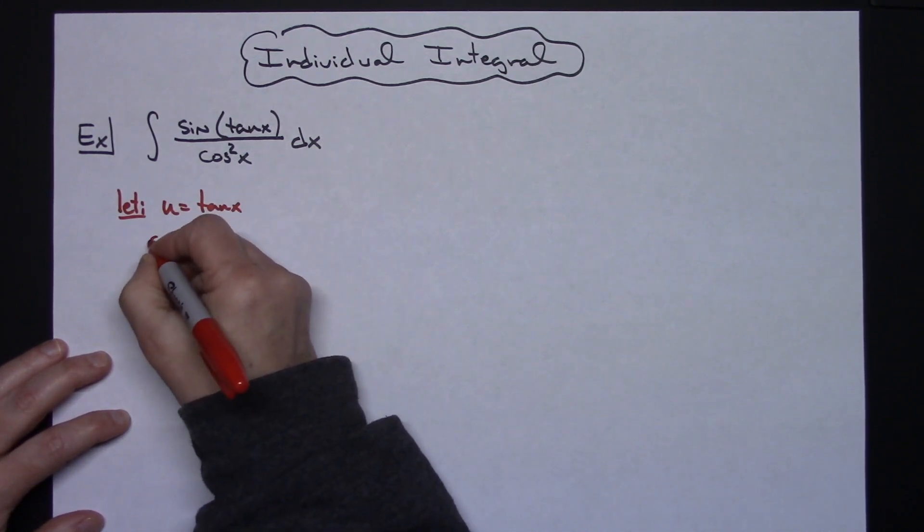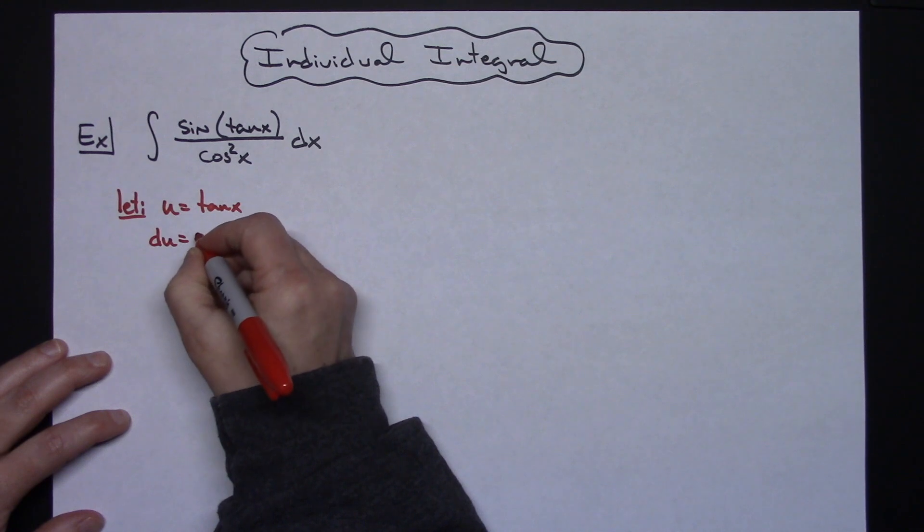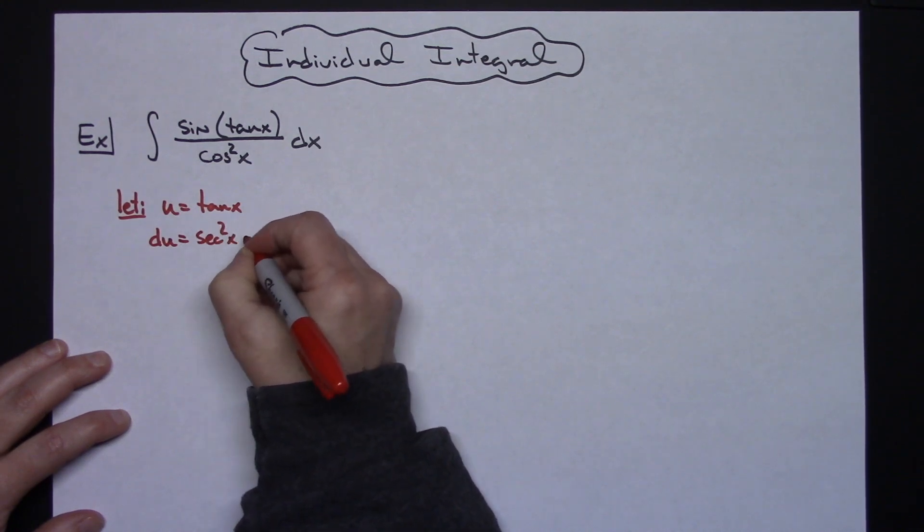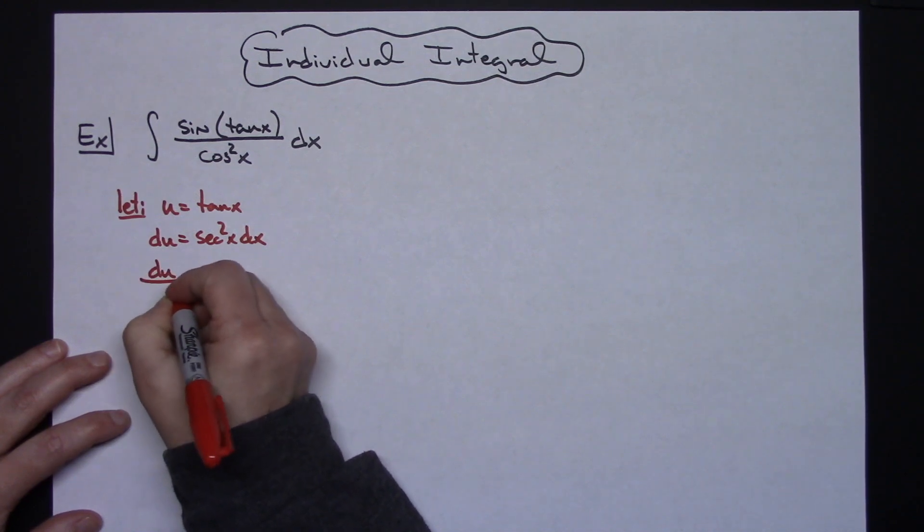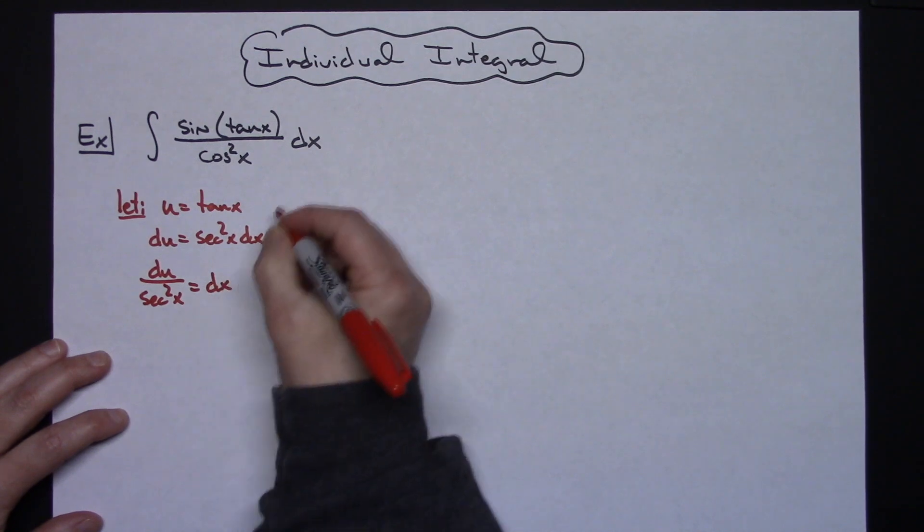When I take the derivative of both sides, I'll have du is equal to secant squared x dx. If I go ahead and solve all the way down for dx, I'll have du over secant squared x is equal to my dx.